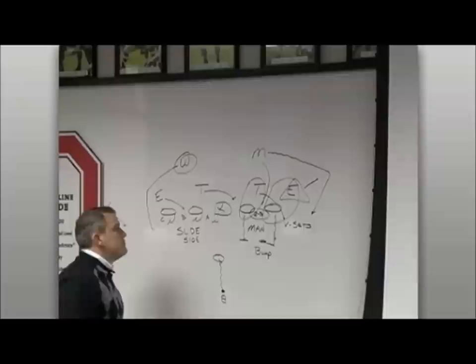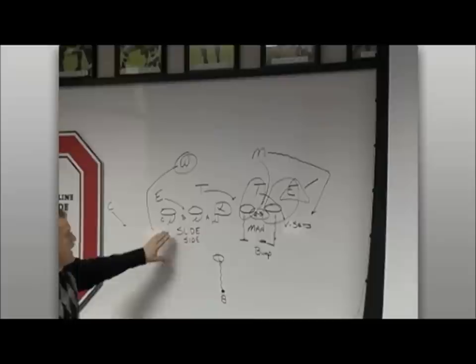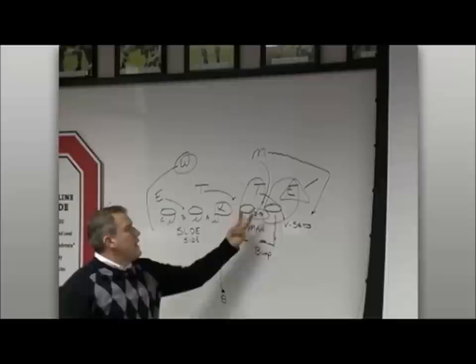So if that happens, our tackle makes an alert call. There's a call we make that alerts everybody that he has a fourth rusher coming, and that would trigger the entire line to understand what's getting ready to happen. We'd still block C, B, and A gaps. But then on this side, they're ready to squeeze the A and B gaps to take away that pressure, knowing that the backside end usually drops when you get a four-man pressure to this side.